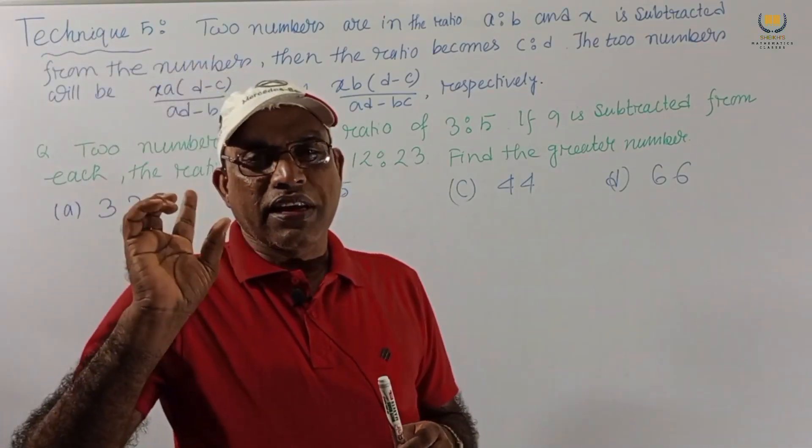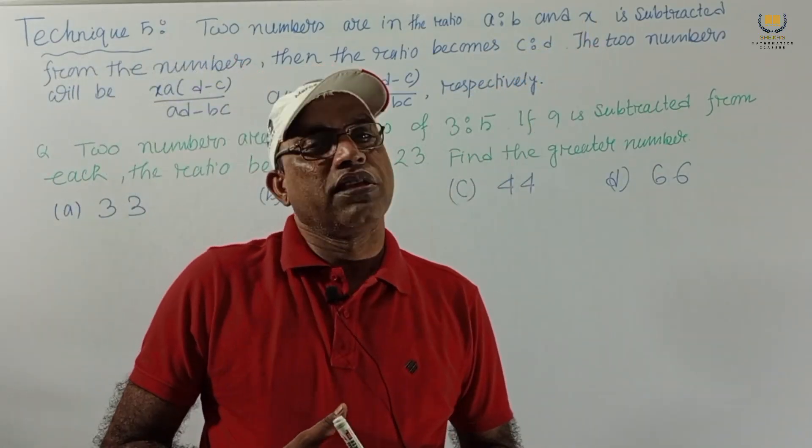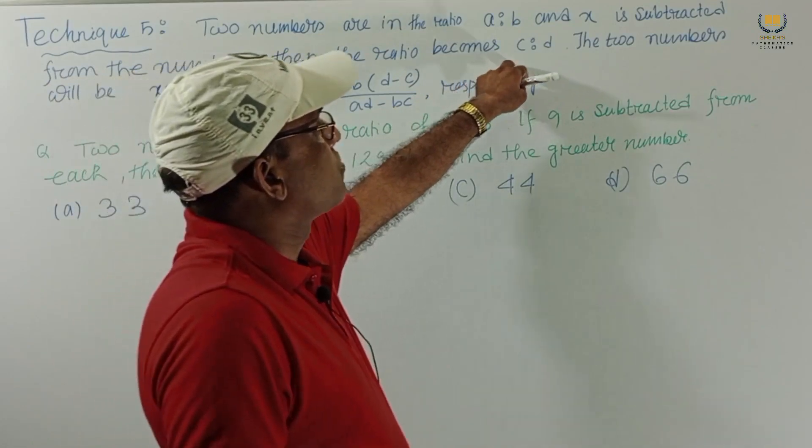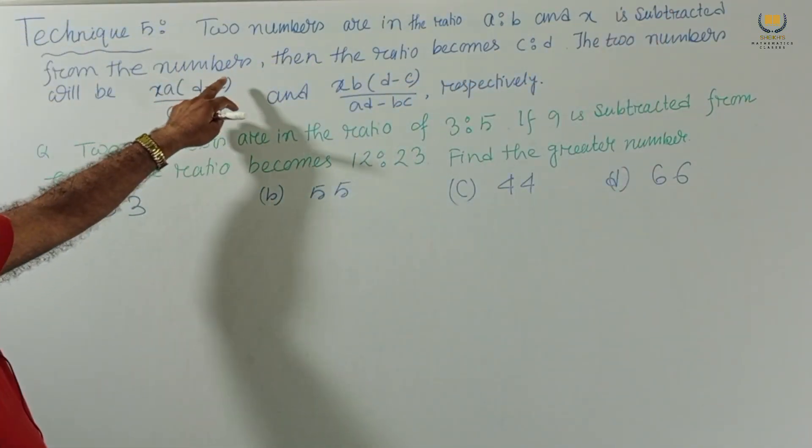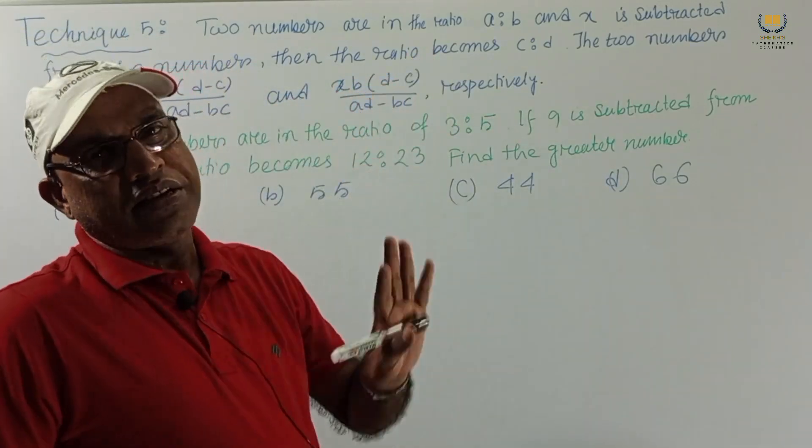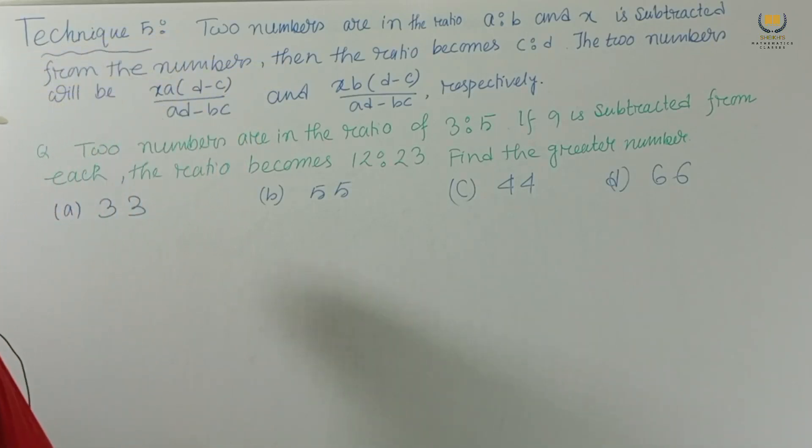Two numbers are in the ratio a to b given and we subtract x from these two numbers. And after subtracting we get the ratio c is to d. Then the numbers will be x(ad-c)/(ad-bc) and x(bd-c)/(ad-bc). This is the formula and technique number 5. Now let us consider one problem.